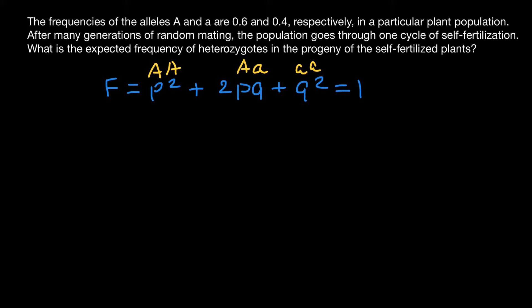We know the frequencies of the dominant allele A and recessive allele a. In our formula, p stands for the dominant allele and q stands for the recessive allele. These two alleles make up 100% of the alleles in this gene pool. The frequency of the dominant allele p is 0.6 and the recessive allele q is 0.4. We can put these numbers into the formula to find the genotype frequencies before self-fertilization.